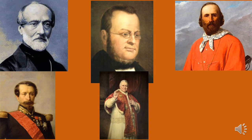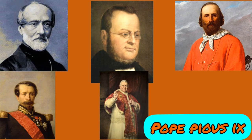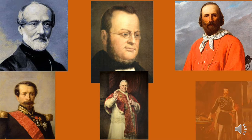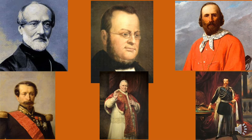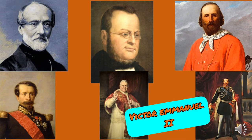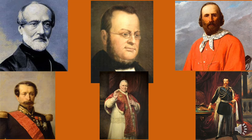We are going to talk about religion and the Papal States. This is Pius IX, who was the Pope at the time of Italian unification in 1870. And finally, the first king of unified Italy: Victor Emmanuel II, who was the last king of Sardinia and the first king of unified Italy. These people played very important roles in the unification of Italy.